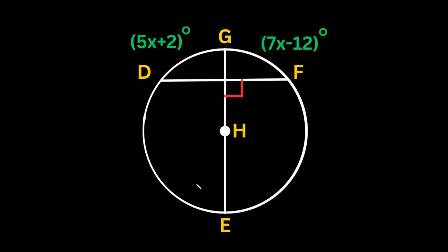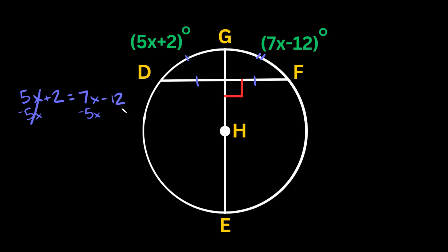For the last problem, a diameter and a chord create a 90-degree angle, so both chord sides are congruent, meaning their arc measures are also congruent. Setting the arc measures equal: 5x plus 2 equals 7x minus 12. Moving terms gives 14 equals 2x, so x equals 7.